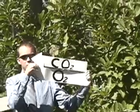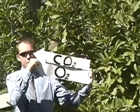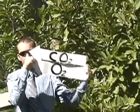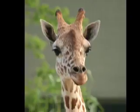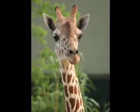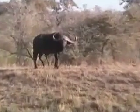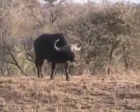The carbon then gets distributed throughout the food chain because the primary consumers eat the producers, such as a giraffe eating leaves, and the secondary consumers eat the primary consumers.